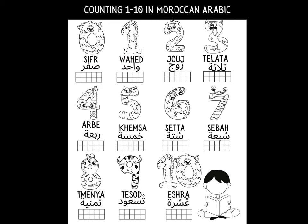Great job! Let's try putting them all together now. In your global studies books you should find a page that looks like this — these numbers should help you be able to count from one to ten in Moroccan Arabic. All right, here we go. How did you do?